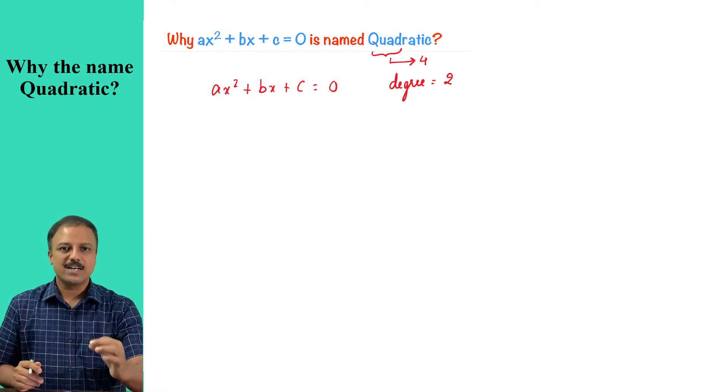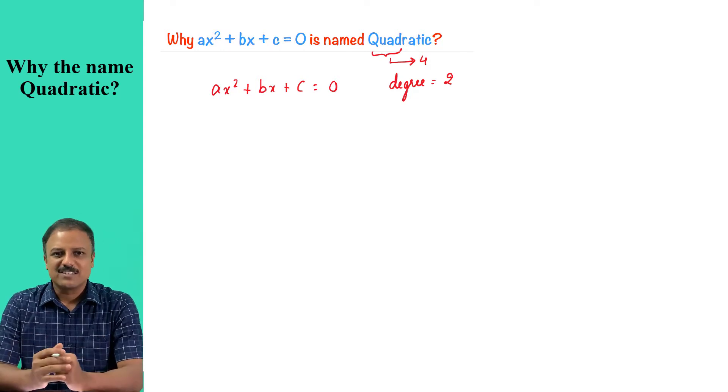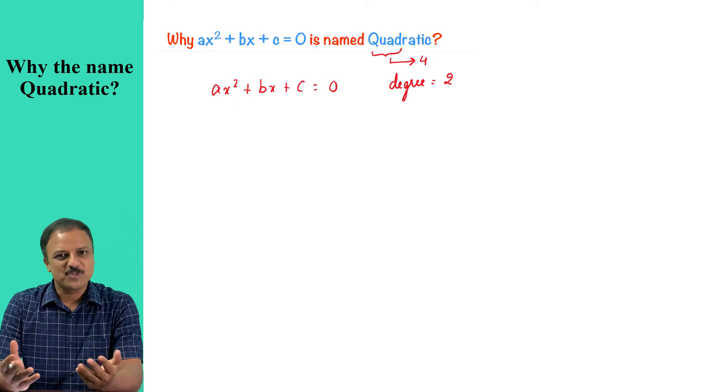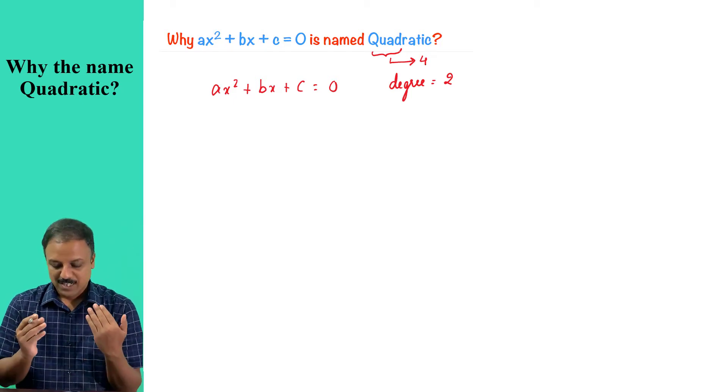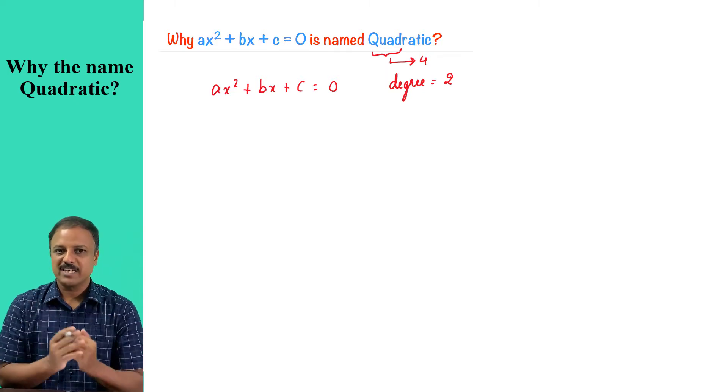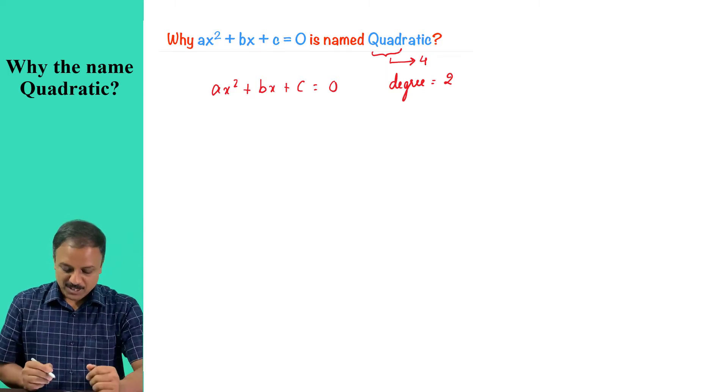So you have heard about quadrilaterals. What is a quadrilateral? A four-sided closed polygon is called a quadrilateral. So when I say four-sided, now this word quad relates to that number of sides four.